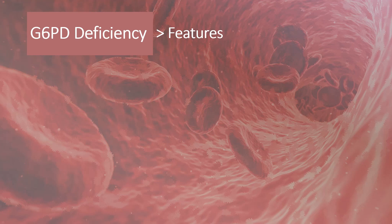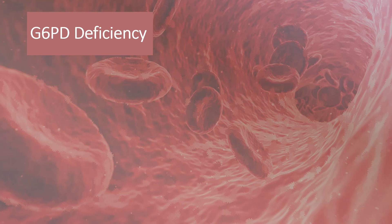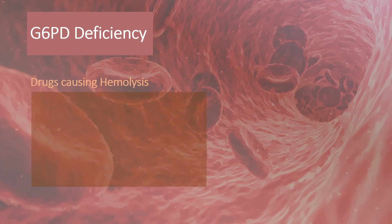Features of the disease include neonatal jaundice and intravascular hemolysis, which is precipitated by infections, many drugs, and some foods like fava beans. Let's look at which drugs are implicated in precipitating a hemolytic crisis.